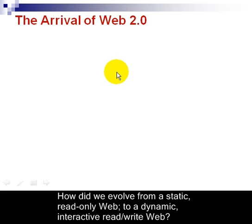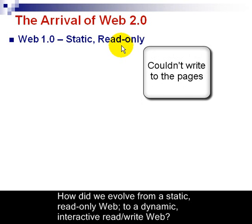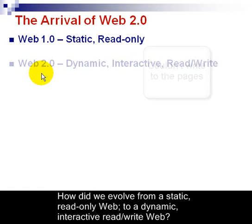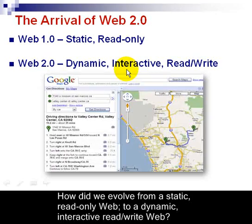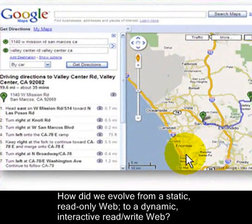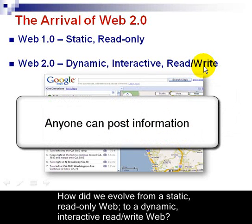Let's look at the arrival of Web 2.0. The early Web was static and read-only. Static meaning that once a web page was loaded, it didn't change. Read-only means that you really couldn't do any writing on the pages — you pretty much just read the page. Web 2.0, on the other hand, is dynamic and interactive. Once the web page is loaded, it can change in response to a user action. It is commonly referred to as the read-write web because anyone can post information to the web.